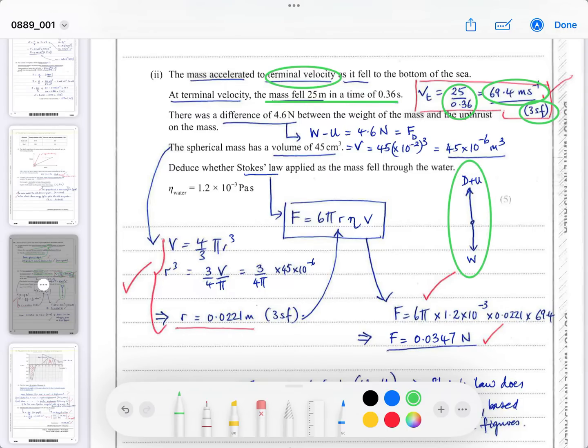It then says there was a difference of 4.6 newtons between the weight of the mass and the upthrust. Well, if we know that weight is downwards, upthrust is upwards, and while it's falling there's also drag that's upwards. The difference between the weight and the upthrust, if it's moving at terminal velocity, means the forces must be balanced. That means the rest of the 4.6 newtons must be equal to the drag force.